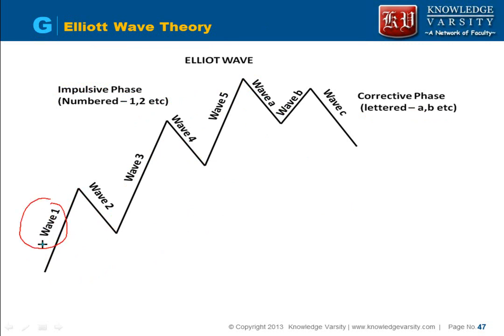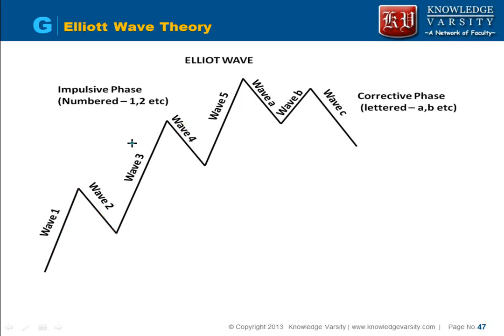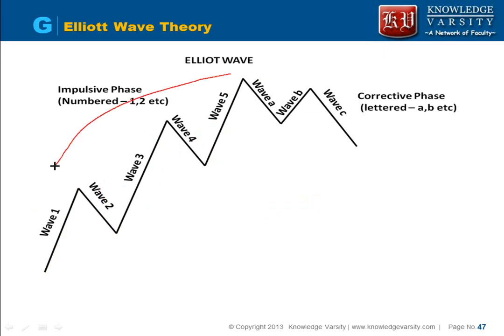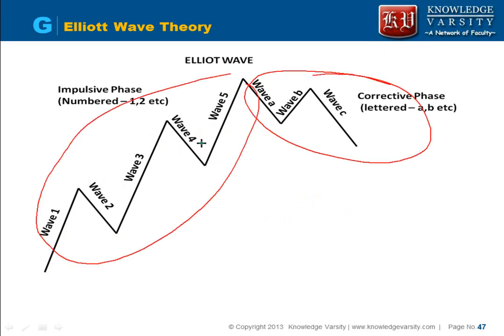In the impulsive phase you have wave 1 (up), wave 2 (corrective, down), wave 3 (up), wave 4 (down), wave 5 (up). Note that wave 3 is typically the longest, and wave 5 is usually lower than wave 3, though sometimes wave 5 can also be longer. After wave 5, the corrective phase begins.